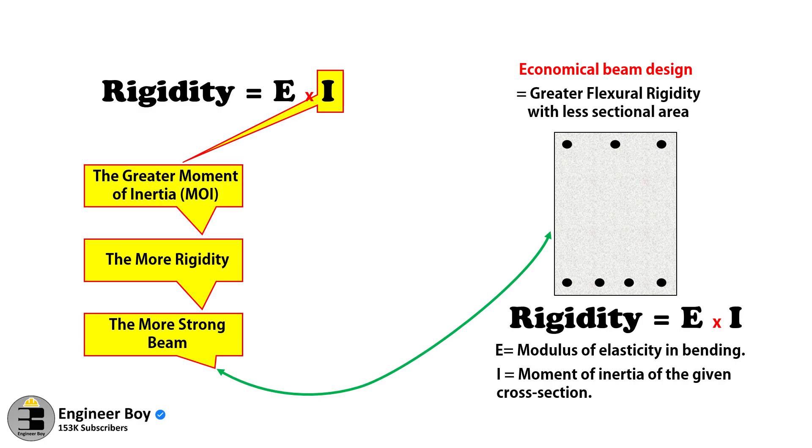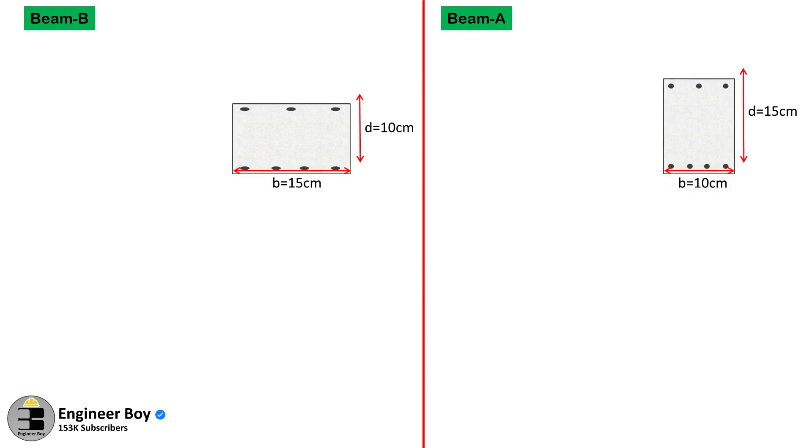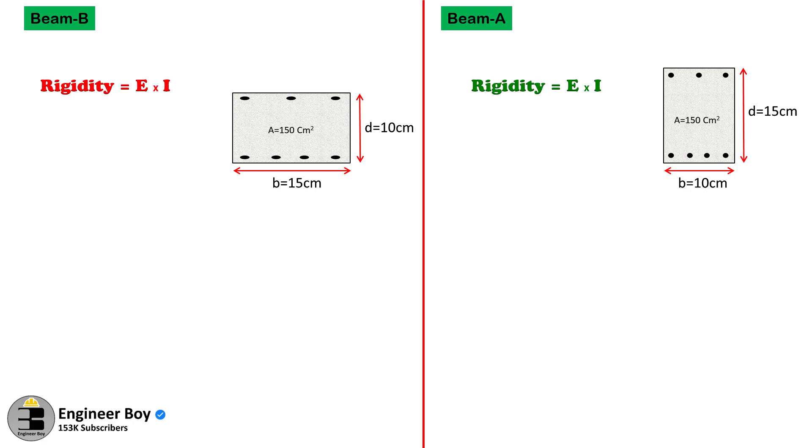Let's just have an example, because an example can be a good way to understand the problem better. Let's consider these two beam sections, where beam A has greater depth than the depth of beam B, but the area of both sections is the same, which is 150 square centimeters each. Now let's consider flexural rigidity for both beams as EI.